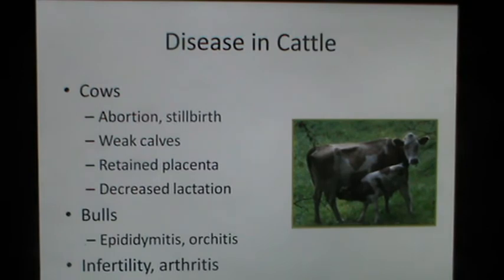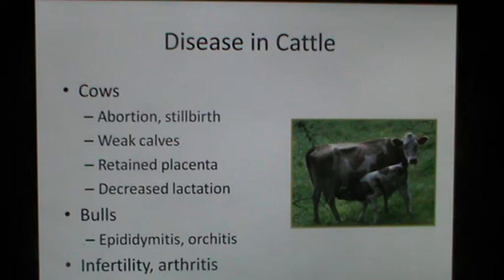In cows, the disease presents as abortion, stillbirths, birth of weak calves, retained placenta and decreased lactation. In bulls, there is appearance of epididymitis, orchitis, infertility and arthritis.